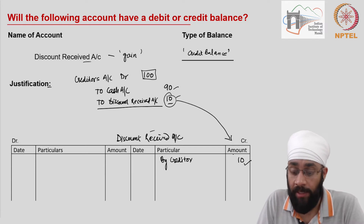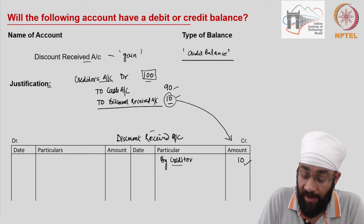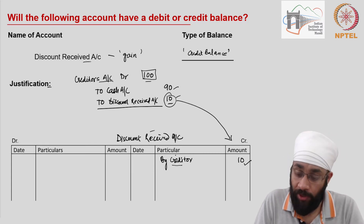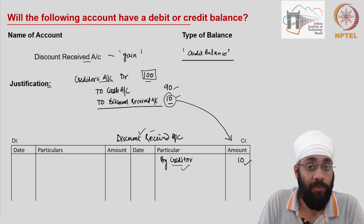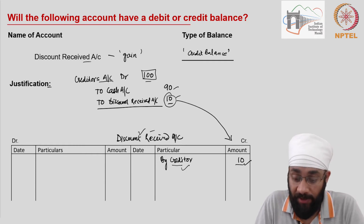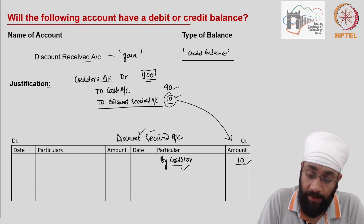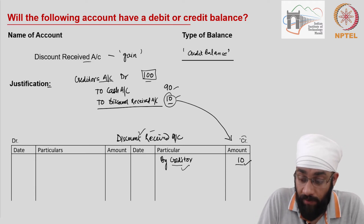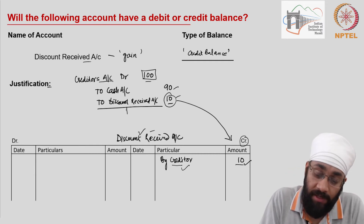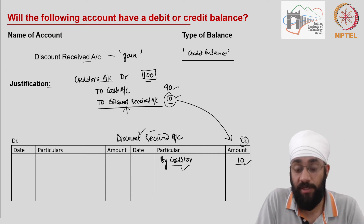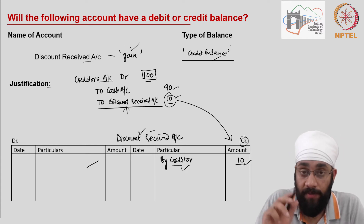The typical confusion among students is that you write 'creditors' here and the creditor's amount is 100. But what we are really saying in plain English is: we have received a discount from the creditors — how much? 10. You will always write on the credit side of this account. There is no other transaction involving discount received, so it will always have a credit balance. All gains have a credit balance.